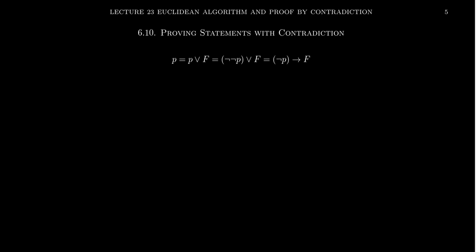If you assume a statement's false and get a contradiction — the king of all contradictions being: you have some statement Q and you've also proven its negation. The statement Q and not-Q is a contradiction; it is always false, no matter what Q is. If you can prove a contradiction after making some false assumption, then that means the statement actually was false. That's how one proves by contradiction — it's a really nice technique.